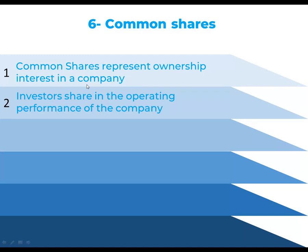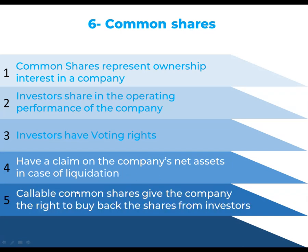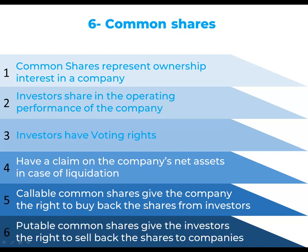Six: common shares. Common shares represent ownership interest in a company. Investors share in the operating performance and have voting rights. They have a claim on the company's net assets in case of liquidation. Callable common shares — callable means buy — so the company has the right to buy back the shares from investors. Putable common shares give the investors the right to sell back the shares to the company.